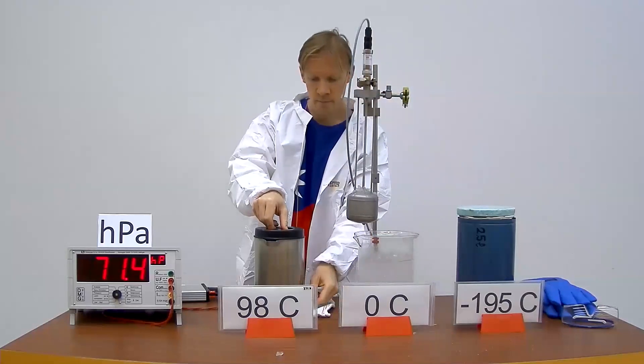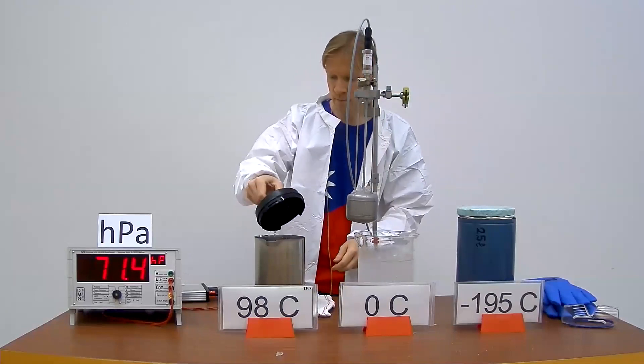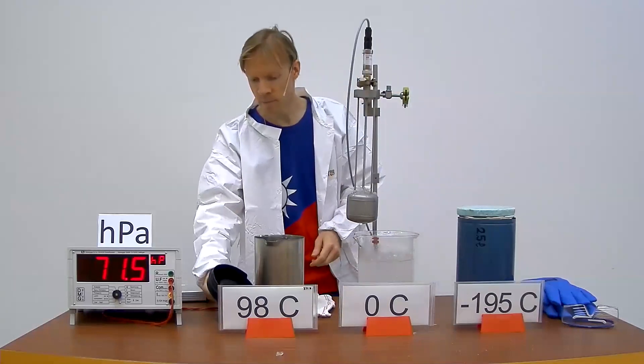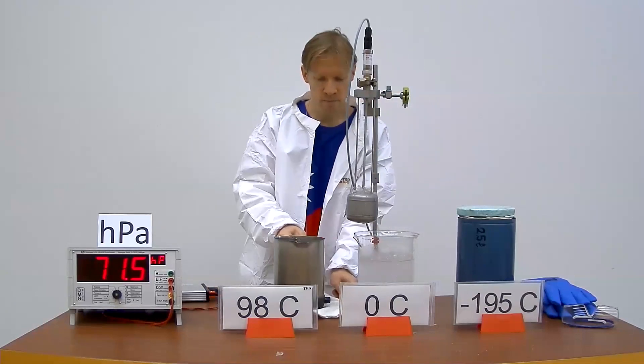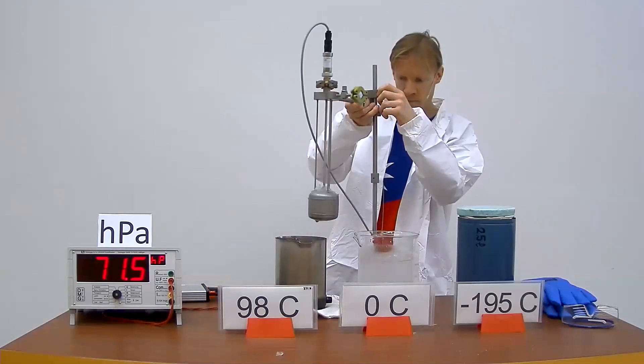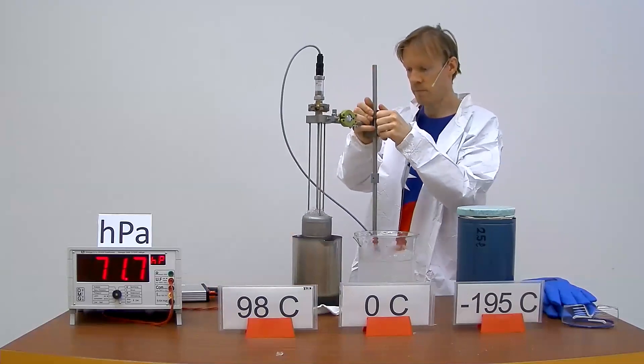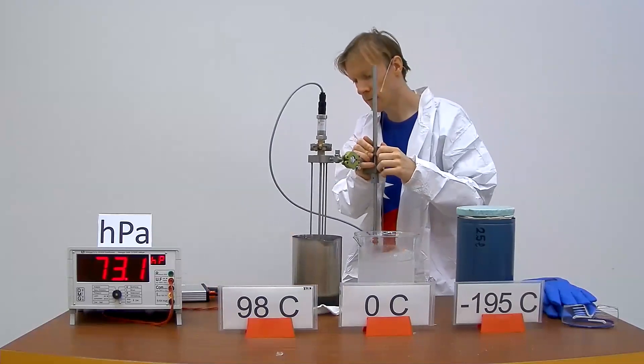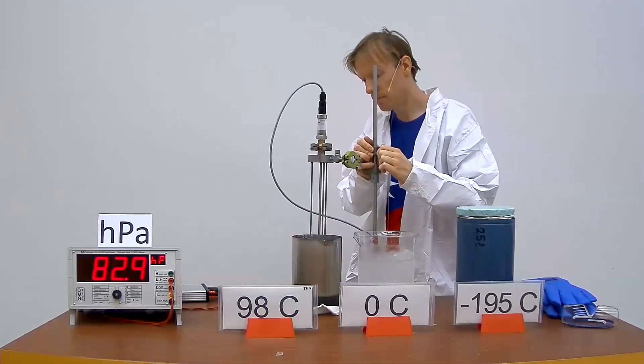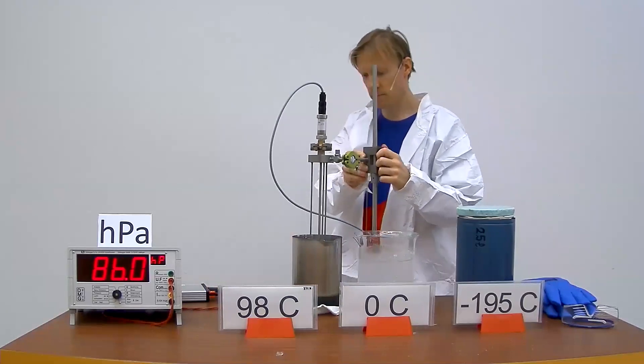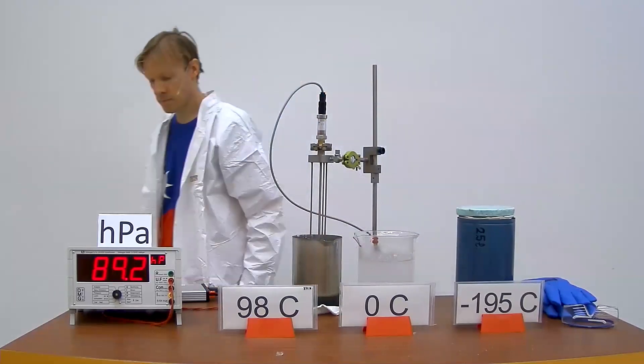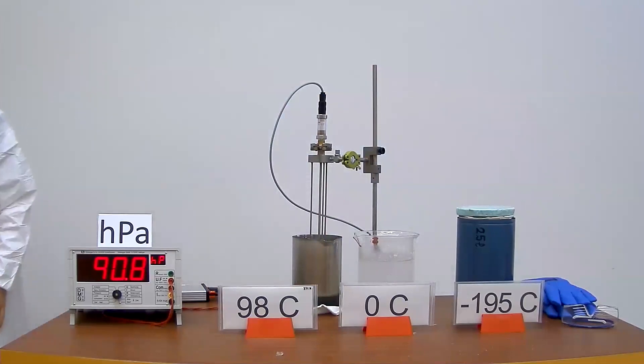In the second step of the experiment, we bring the same gas container connected to the pressure sensor into boiling water. This boiling water has about a temperature of 98 degrees C. When one immerses the container into that boiling water, the pressure inside the container will rise and we will take note of that by reading out the pressure sensor.